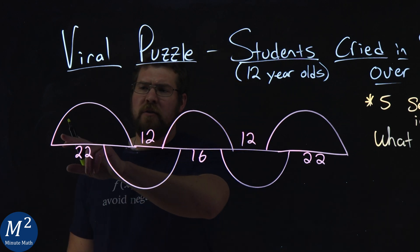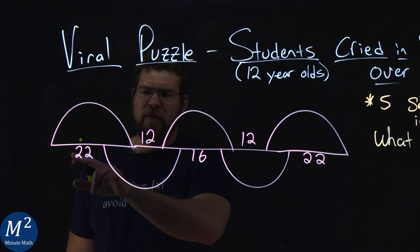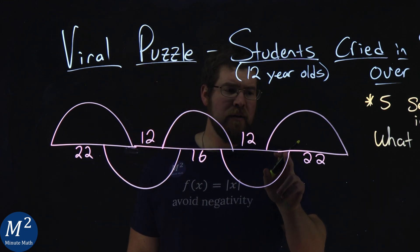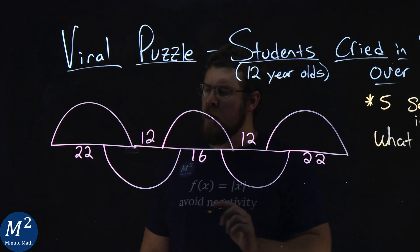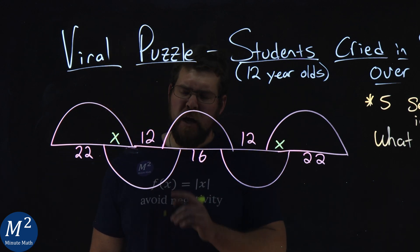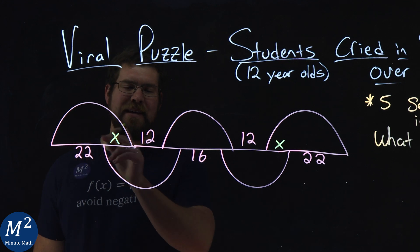We know this semicircle diameter has 22 here plus some other length here, and that length again is repeated here, and that 22. So let's call that length x right there. So we have 22 plus x is that diameter.